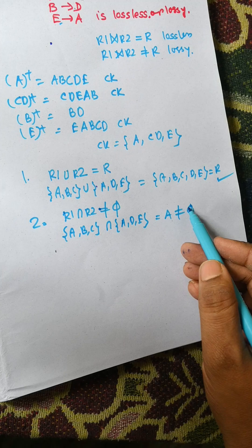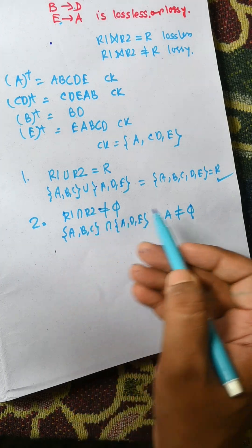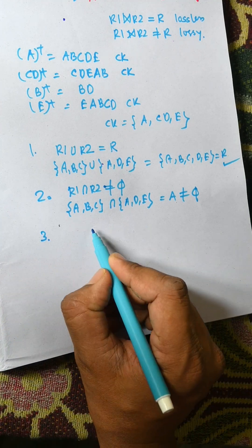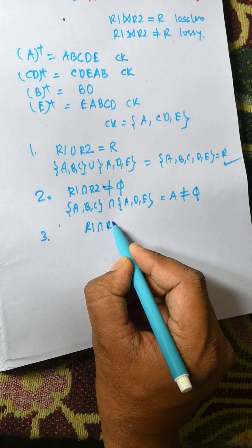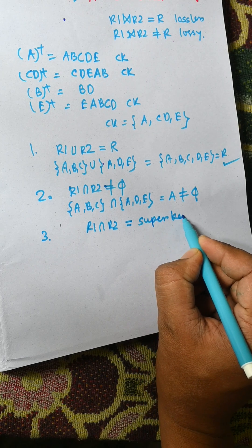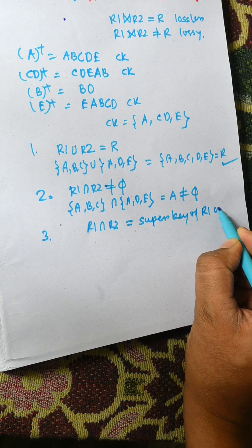So if it is false, then we can say it is lossy. As it is true, we need to check the third rule. The third rule says that when you perform intersection between R1 and R2, that can be a super key of either R1 or R2.